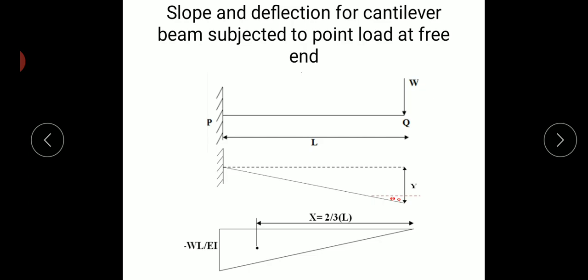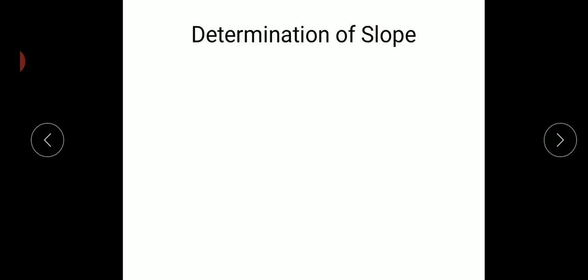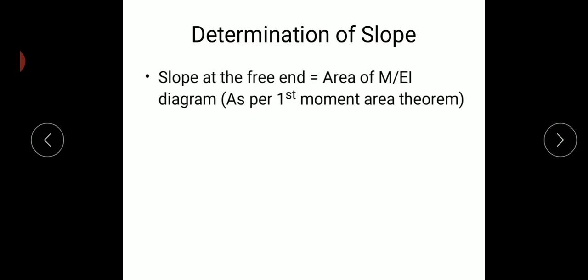Since this is the M/EI diagram, the moment at point P is −WL divided by EI. This gives us the M/EI diagram for the cantilever beam under the point load.